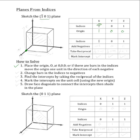We will call this new origin O', and to go along with it, there will be a new x' axis, a new y' axis, and a new z' axis. The next step is to change any bars in the indices to negatives. So bar 1 will become negative 1, but both 0 and 1 will remain the same.